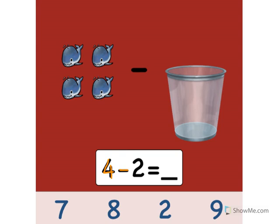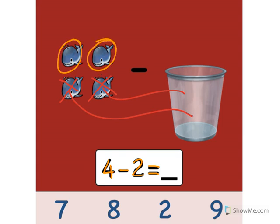4 minus 2 equals what? Well, let's take away 2. 1, 2. Put 2 whales in the trash can. How many whales does that leave us with? Let's count. 1, 2. Our answer is 2. Point to the number 2. Great. 4 minus 2 equals 2. Nice job.